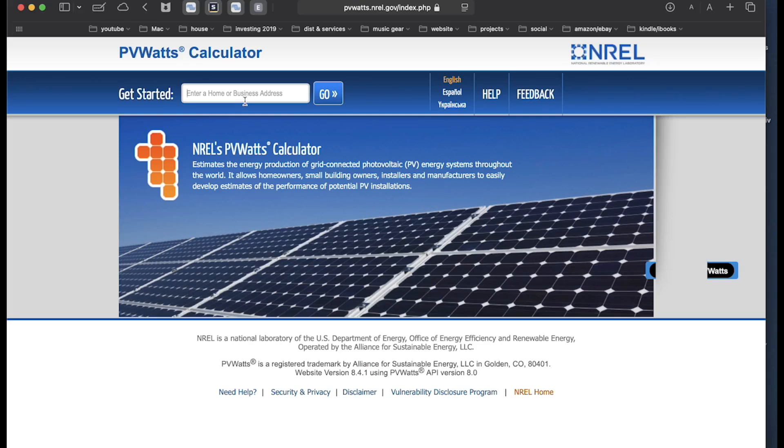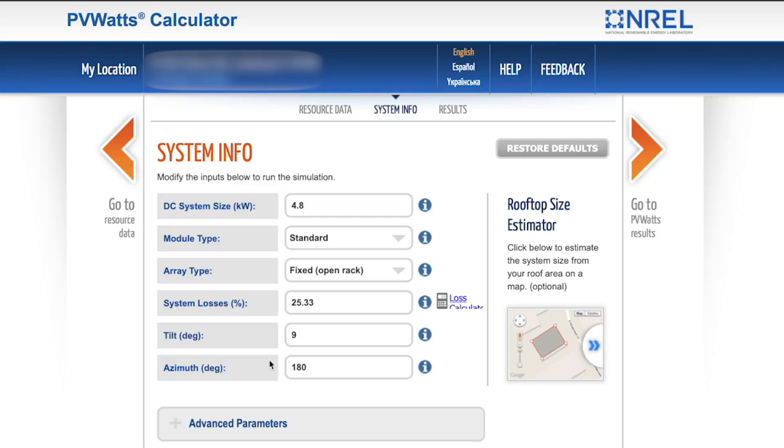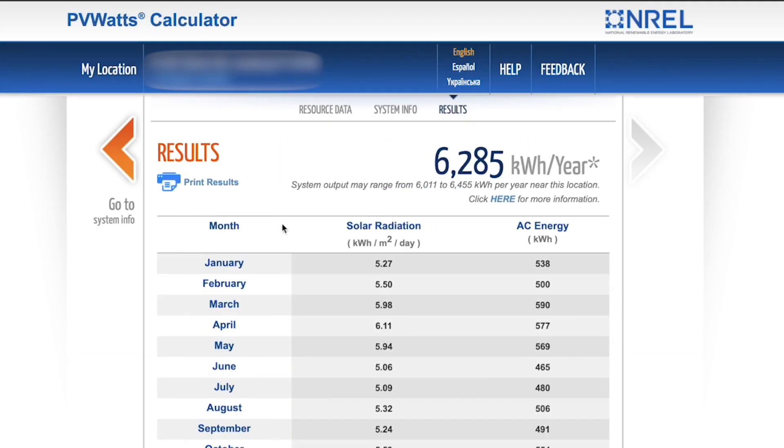To find out I'm going to use this calculator at the National Renewable Energy Labs website. I'll put the link down below. You enter your address in this box, fill out information about your PV panels and here I can enter different tilt angles for my panels to get different results.